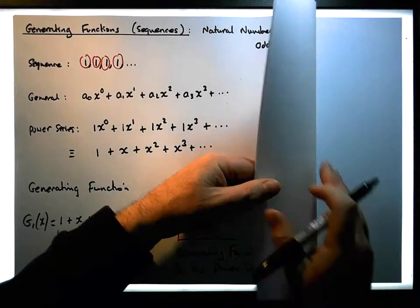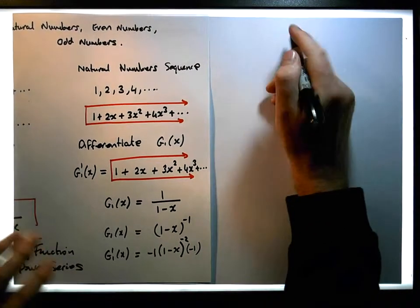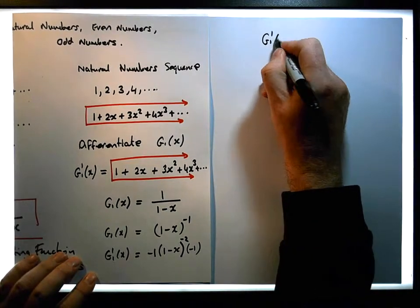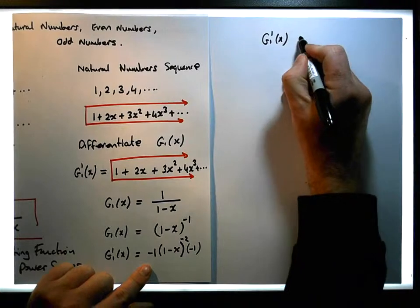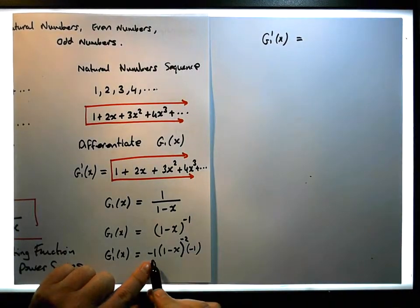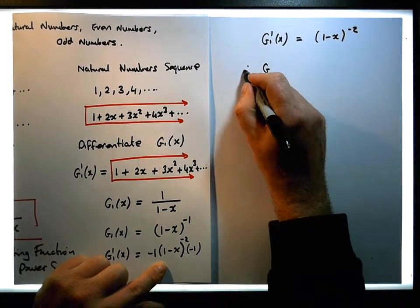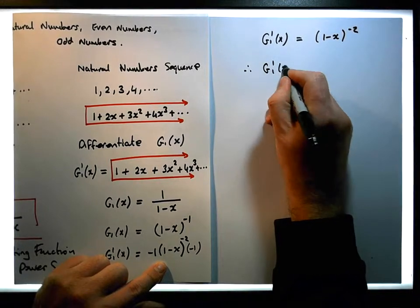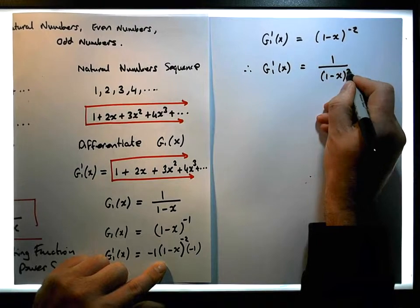Let's go on to a new page. We end up with something really nice: minus 1 times minus 1 gives us plus 1, so g1 prime of x is equal to 1 minus x to the minus 2, which is the same as 1 over 1 minus x squared.